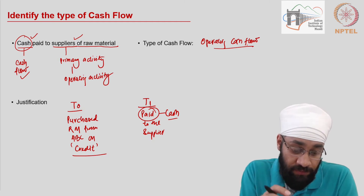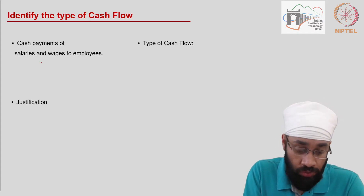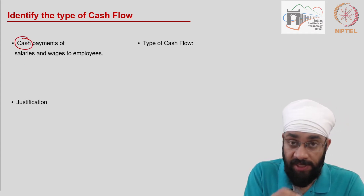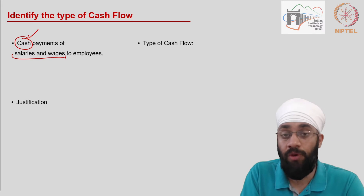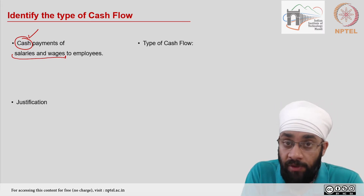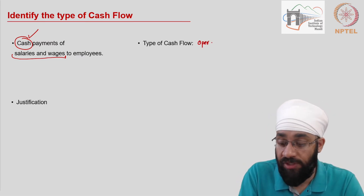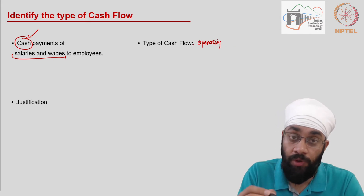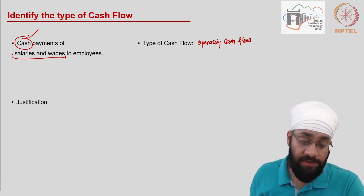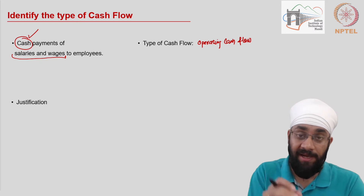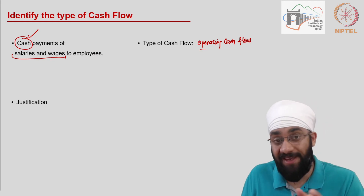Next is cash payment of salaries and wages to the employees of the business. Cash qualifies this as a cash flow, and paying salaries and wages is a primary activity — you hire people to run the business. This is an operating activity, so any cash resulting from it is operating cash flow. For these examples, the focus is on whether the activity is operating, or non-operating — either investing or financing.